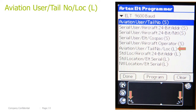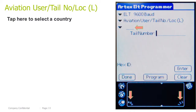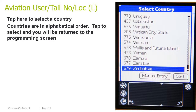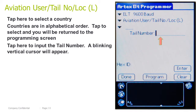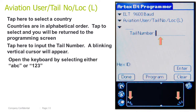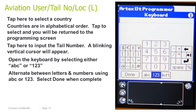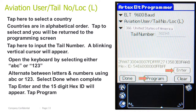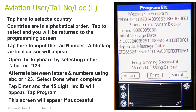Aviation User, Tail Number Location Long. Tap here to select a country — countries are in alphabetical order. Tap to select and you will be returned to the programming screen. Tap here to input the tail number; a blinking vertical cursor will appear. Open the keyboard by selecting either ABC or 123, and alternate between letters and numbers as needed. Select Done when complete. Tap Enter and the 15-digit HEX ID will appear, then tap Program. This screen will appear if successful.